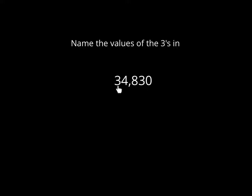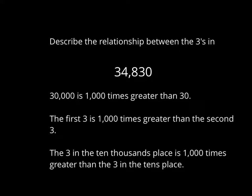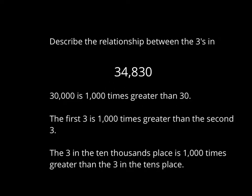What is the value of the 3s in 34,830? Look at where they are — what place are they in? Write them down or say them to yourself. 30,000 is 1,000 times greater than 30, right? 10, 100, 1,000. The first 3 is 1,000 times greater than the second 3. So no matter how you're looking at numbers, if you want to find out the relationship between identical digits, start with the one in the smaller place and say 10, 100, 1,000, 10,000, 100,000, 1,000,000 until you get to the same digit, and that will show you how much bigger it is.